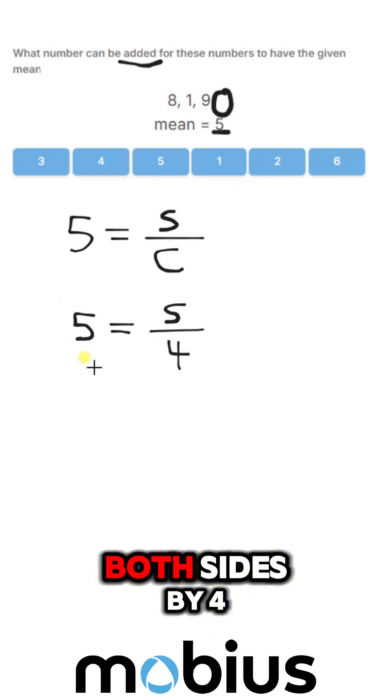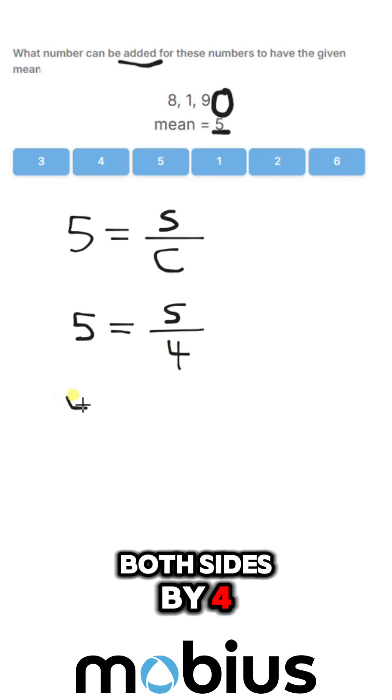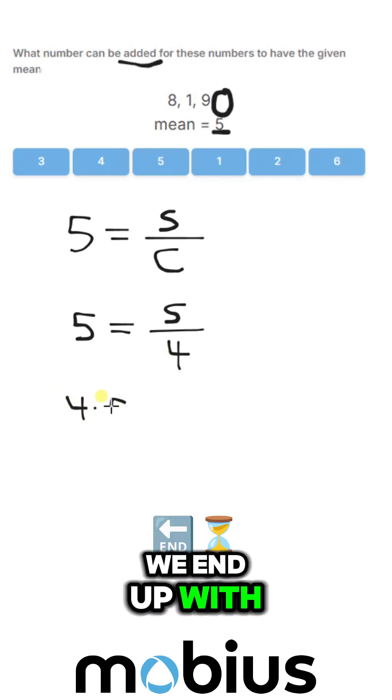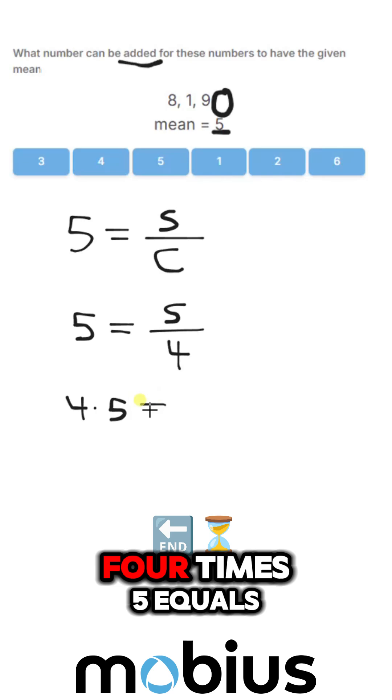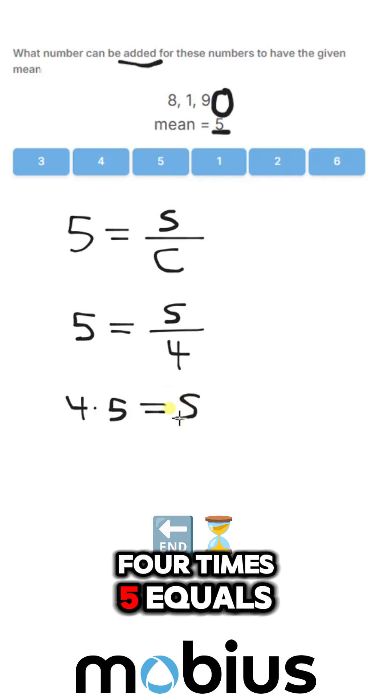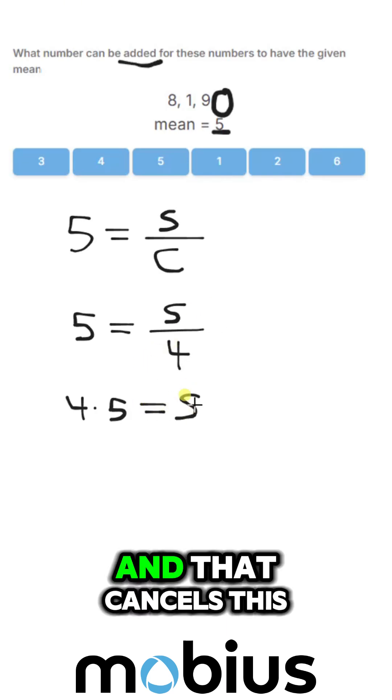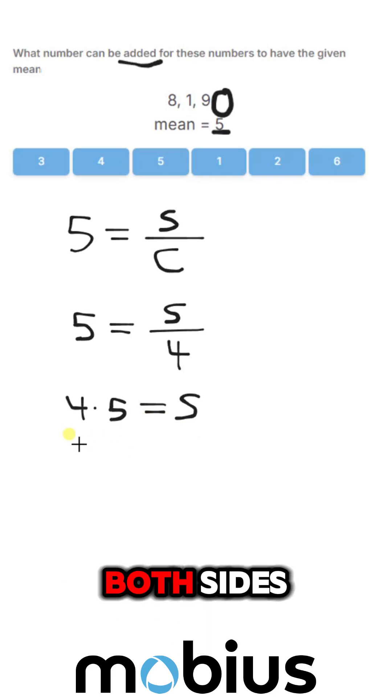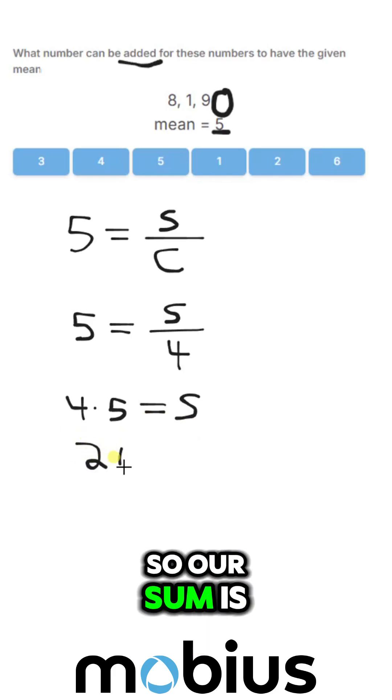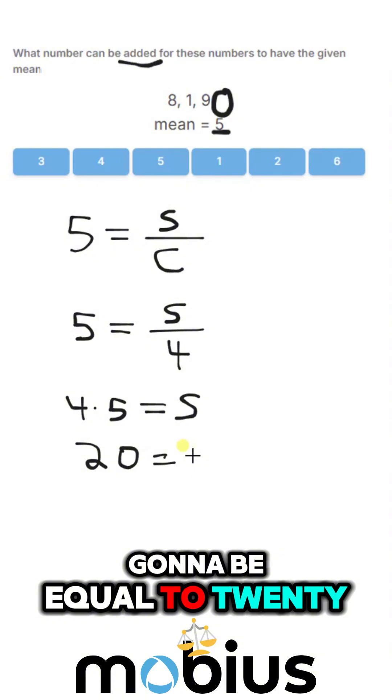So if we multiply both sides by 4, we end up with 4 times 5 equals our sum, and that cancels the 4 out if we multiply both sides. So our sum is going to be equal to 20.